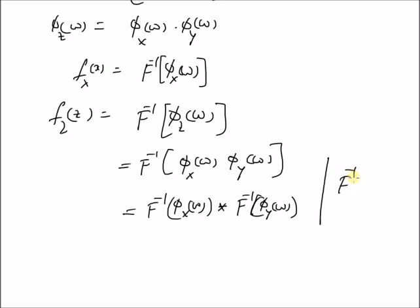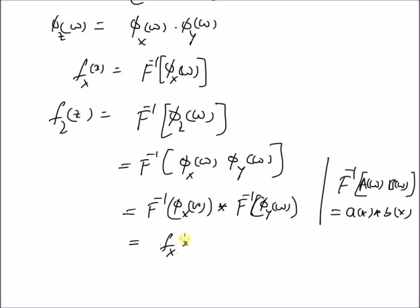This is based on the Fourier transform convolution property: the inverse Fourier transform of a product A(ω)·B(ω) equals a(x) convolved with b(x), where a(x) and b(x) are the inverse transforms of A(ω) and B(ω) respectively. Using this property, we have f_Z(z) equal to f_X(x) convolved with f_Y(y). So the PDF of the sum of two random variables equals the convolution of the PDFs of the individual random variables X and Y, when X and Y are independent. Thanks for watching.